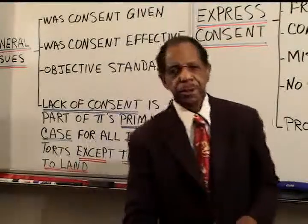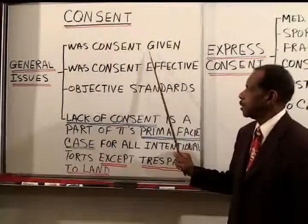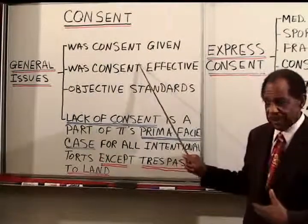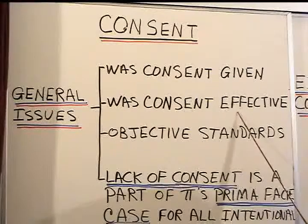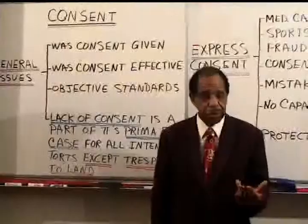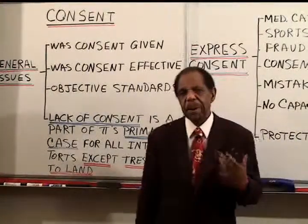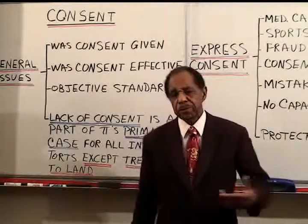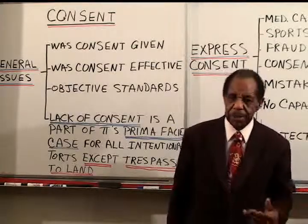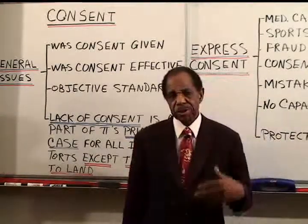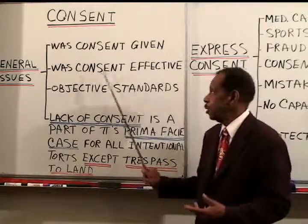With that in mind, you can see that the main issues are: number one, was consent actually given to someone to come into my space, and was that consent effective? You can imagine situations where the consent would not be effective. Certain people don't have the legal power to give consent for certain things. Consent by fraud, consent by mistake. If you give consent to a touch in a certain way and the person exceeds the consent — there are all kinds of problems here as to whether or not the consent will be effective.